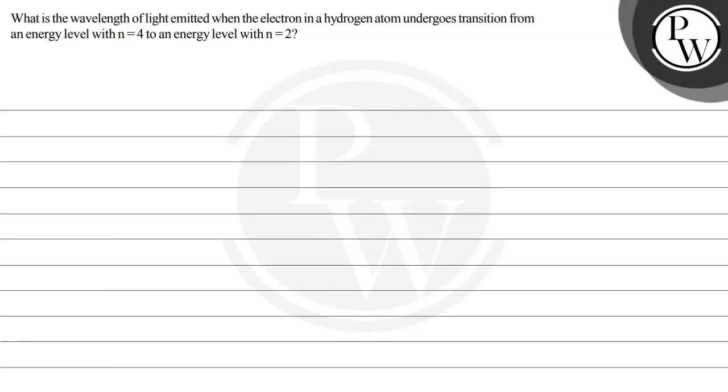Let's read this question. What is the wavelength of light emitted when the electron in a hydrogen atom undergoes transition from an energy level with n equals 4 to an energy level with n equals 2? The key concept here is hydrogen spectrum.